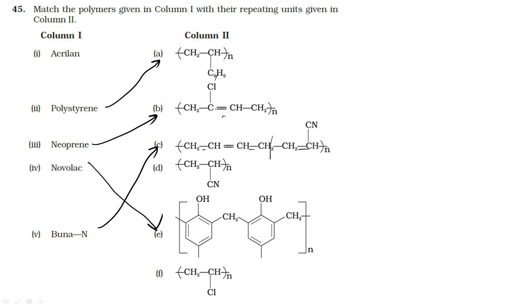This structure is Novolac. If you cross-link it, it becomes Bakelite. The acrylonitrile monomer (with CN group) is also called Orlon. These are the final answers.